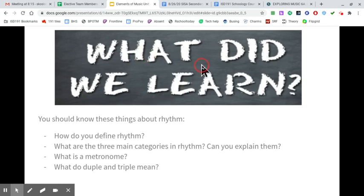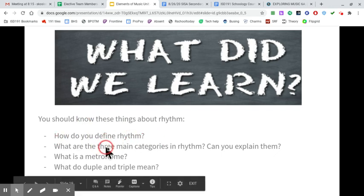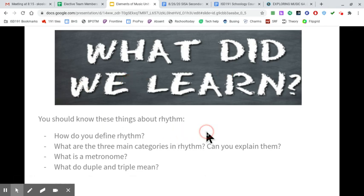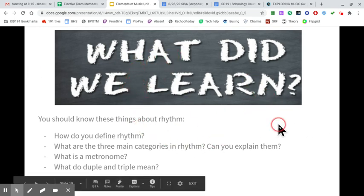So what did we learn today? You should know these things about this rhythm lesson for today. How do you define rhythm? What are the three main categories in rhythm? And can you explain them? What is a metronome? And what do duple and triple mean? If you have any questions, contact your music teacher. We're happy to answer questions for you and we'll get back to you as soon as we can. Hey, we're really excited about this Elements of Music lesson. This has been really fun for us, and we will see you guys again soon. Thanks so much.